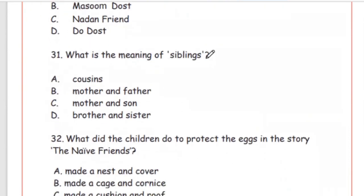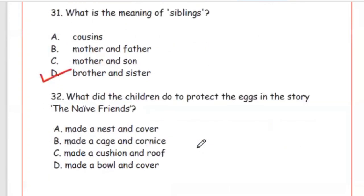Question 31: What is the meaning of siblings? As told earlier, siblings means Option D, brother and sister. Question 32: What did the children do to protect the eggs in the story 'The Naive Friends'? Option C is the right answer — they made a cushion and a roof.